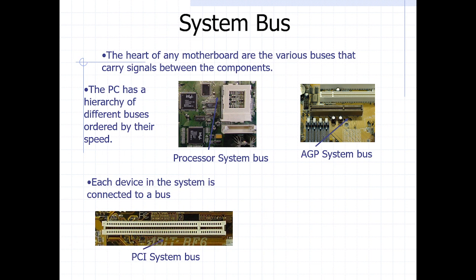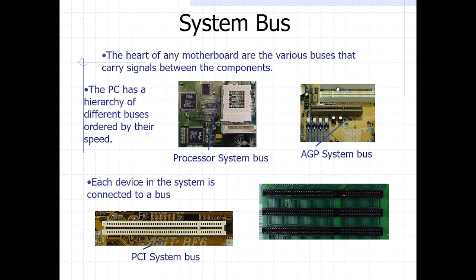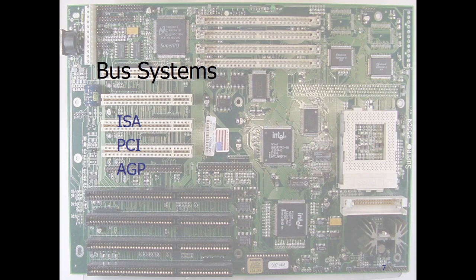The PCI — Peripheral Component Interconnect — is another one we're going to look at. It is the newer version that most computers use. And of course you have the earlier version, which is the ISA system bus. So ideally we have three main system buses: the ISA, the PCI, and the AGP.